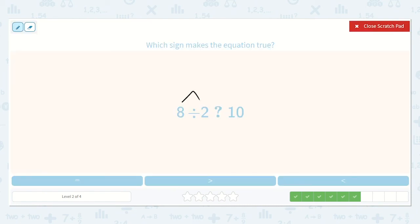Here we have 8 divided by 2. And then we have 10. So 8 divided by 2 I know is 4. So 4 is less than 10. So it would be this symbol.